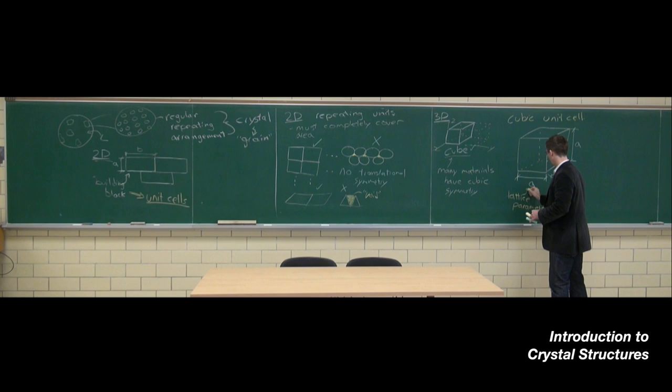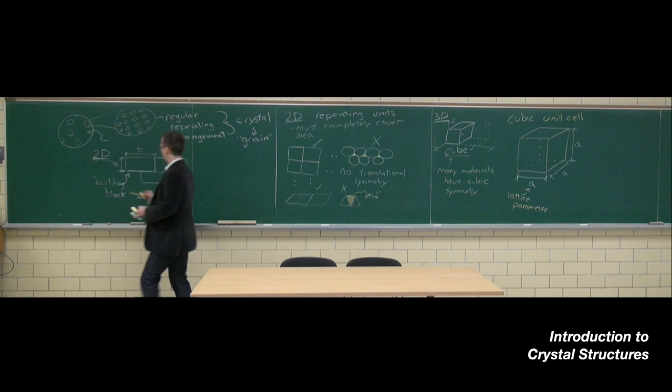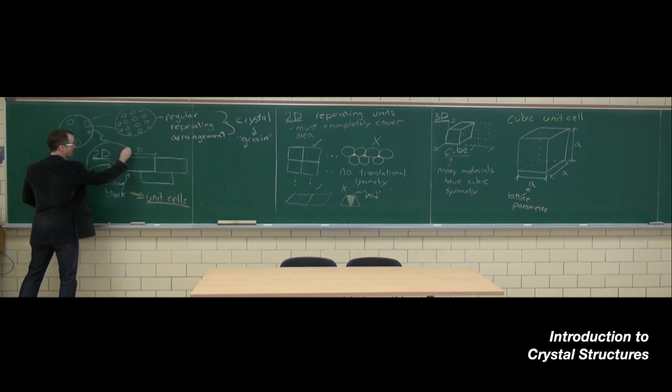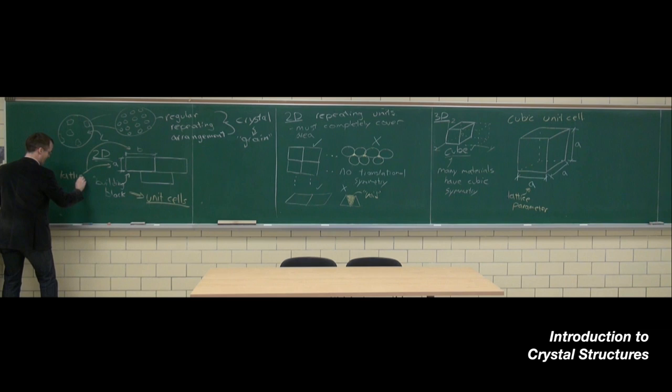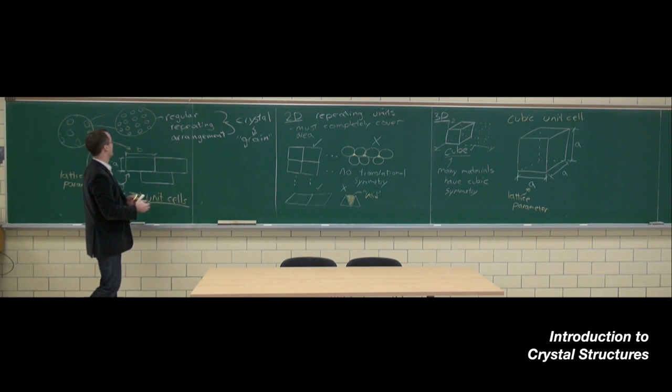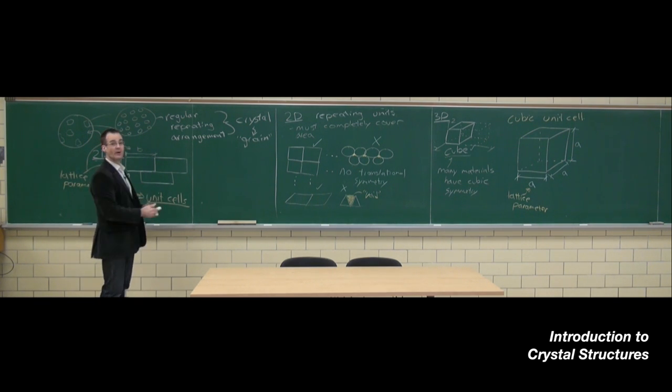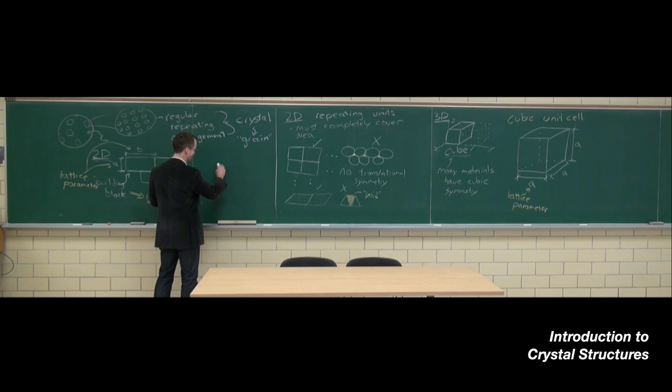We've got only one lattice parameter in the case of a cube. If it was a rectangle we would have two lattice parameters. I should also just for a moment expand on what this word lattice means. Lattice—if English is perhaps not your first language you may not have come across that—but the word lattice essentially describes a repeating framework.